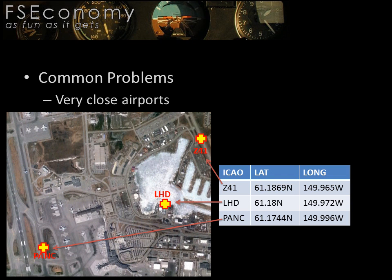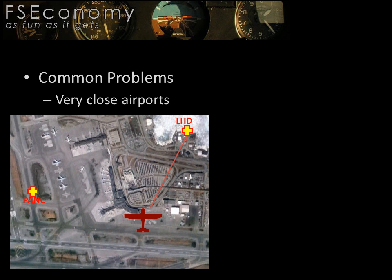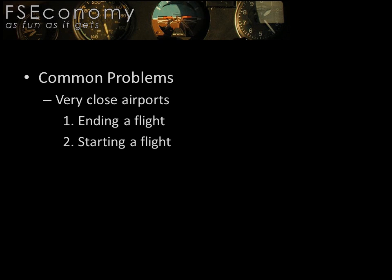According to Google Earth, the coordinates in the FSE database put the exact location for these three airports in the locations shown here. The resulting problem, with the method FSE uses to determine your location by calculating the nearest coordinates, is that if you park your plane on the southeast end of the terminal building, FSE will believe that you are on the water at Lakehood, not at the International Airport. If you just landed at Anchorage-Stevens International Airport in your CRJ-200, and the system placed you at Lakehood, your shiny new jet is now sitting in the water, your passengers did not get off, and you did not get paid for your flight.